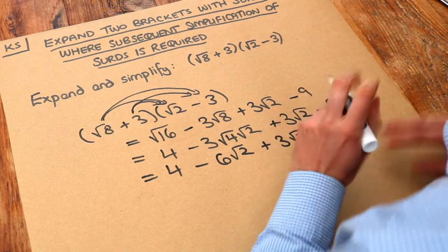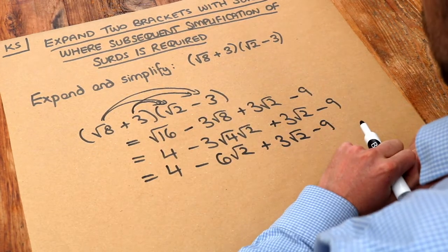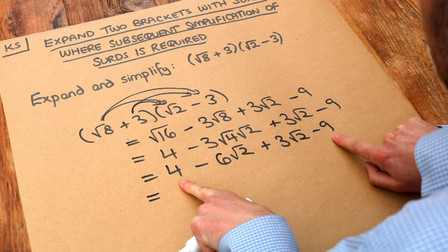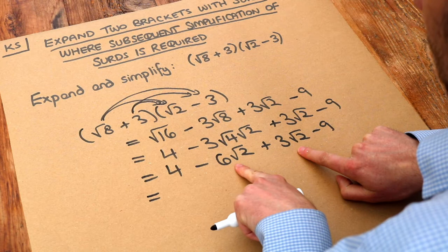And at this point we can collect like terms just like we would with algebra. Except here we collect the non-surds terms together, the things without the square root, and we collect the surds terms together.